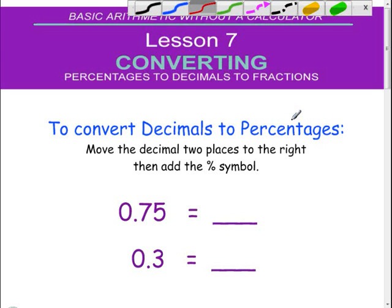We're going to start with the easiest of these operations and that is converting decimals into percentages. And one of the things that's so easy about it is that there's really not much math involved at all. You simply move the decimal point two places to the right and then add a percentage symbol.